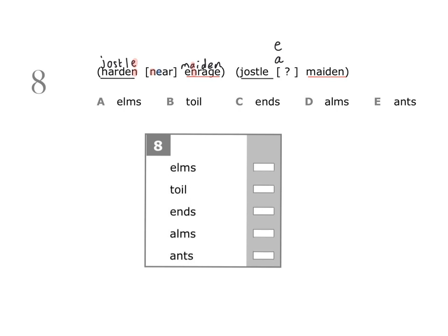Moving on to the second letter of 'near', which is E. There's an E in 'harden' that corresponds to the letter L in 'jostle'. There's an E at the beginning of 'enrage' which corresponds to the letter M of 'maiden', and there's an E at the end of 'enrage' which corresponds to the letter N in 'maiden'. So the second letter is either L, M, or N. The third letter of 'near' is A — there's an A in 'harden' corresponding to the O in 'jostle', and an A in 'enrage' corresponding to the D in 'maiden'. So the third letter is either O or D.